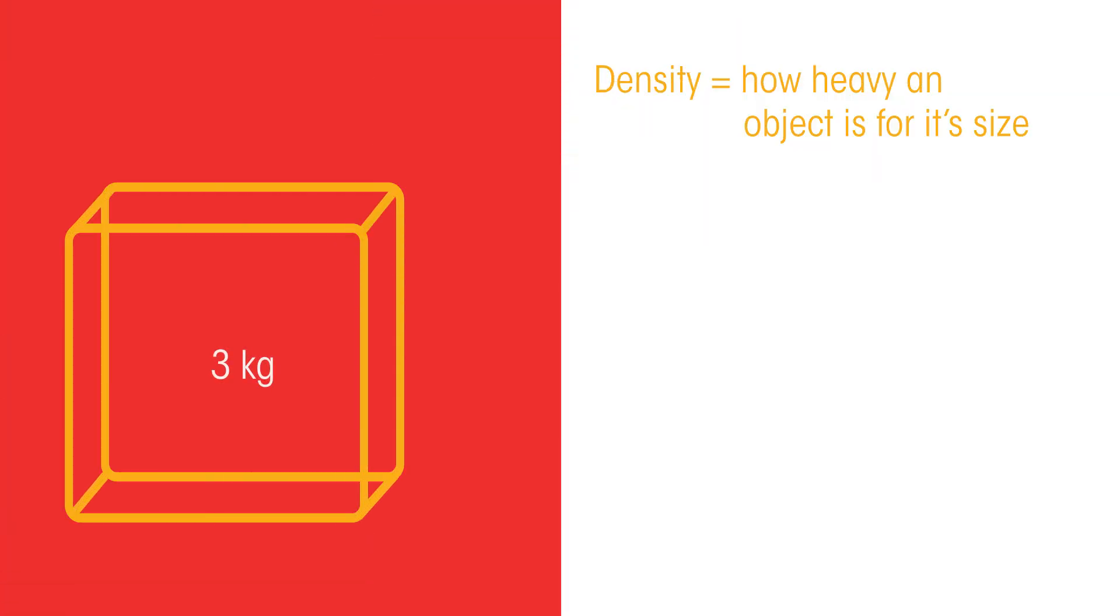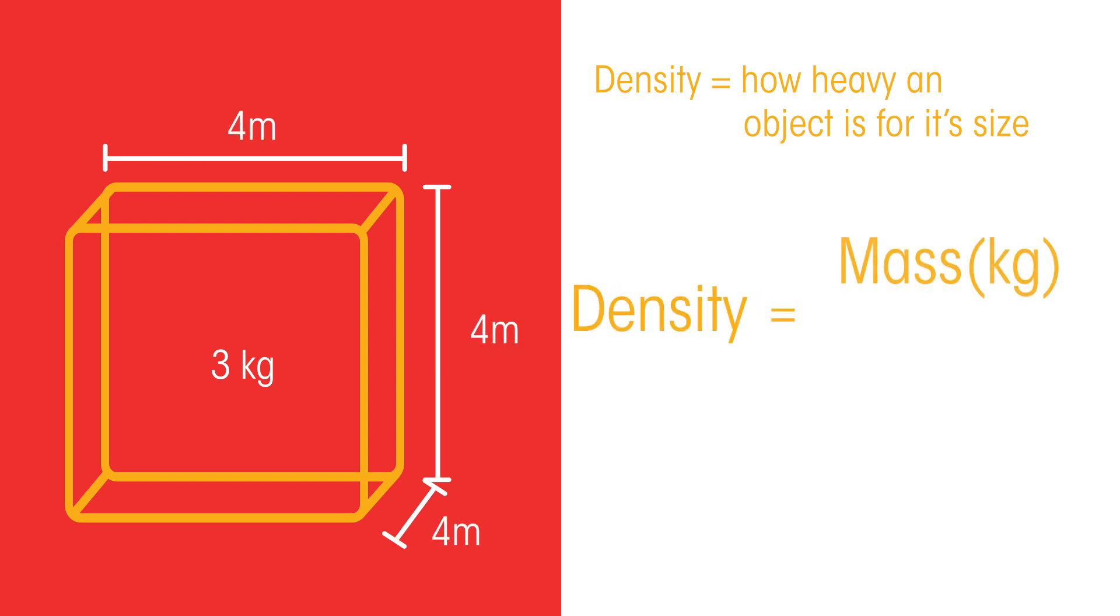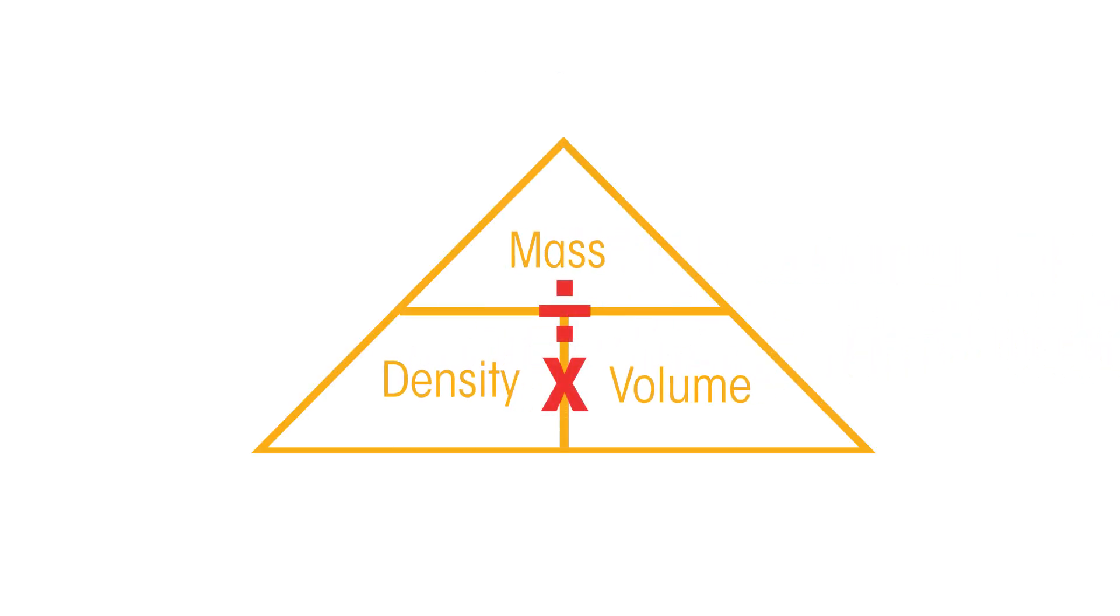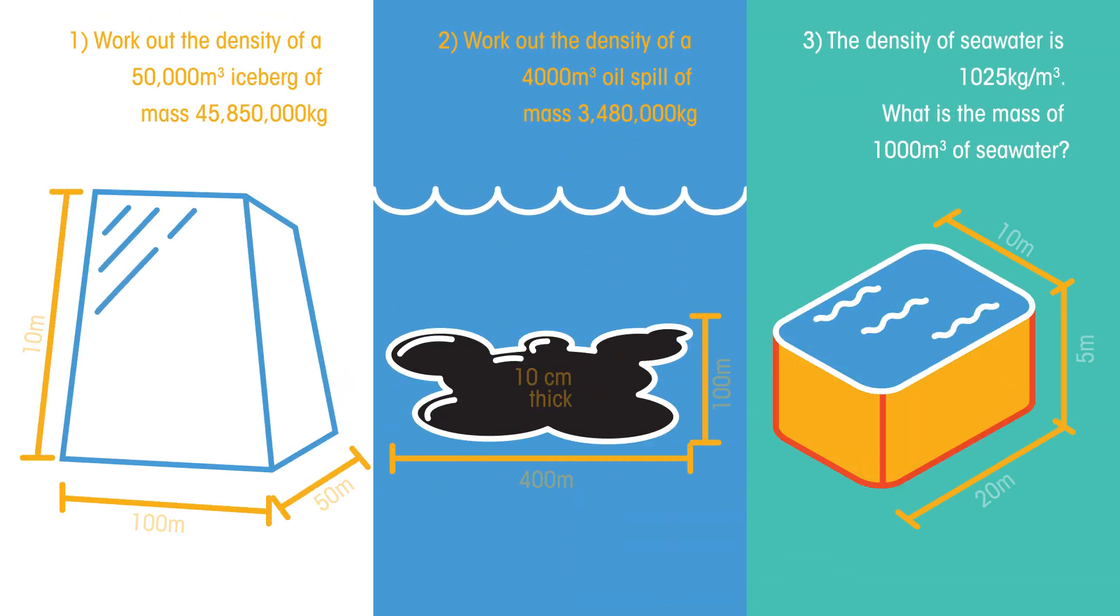Density is how heavy an object is for its size. To calculate the density of an object, divide its mass in kilograms by its volume in cubic meters. These are the units used for density. Using this formula, give these density questions a go. Notice that question 3 is a little different.